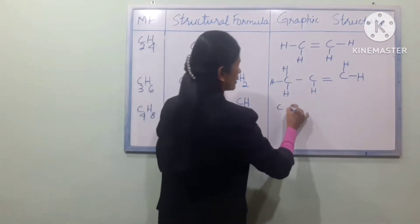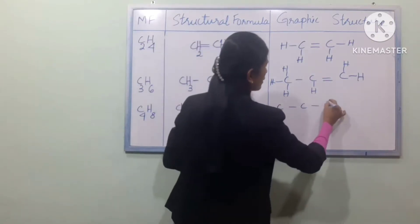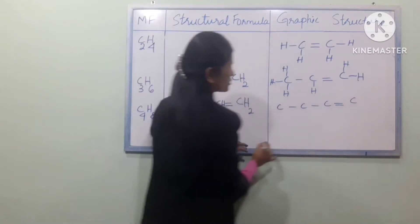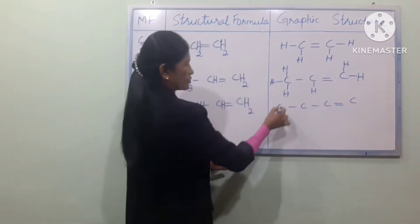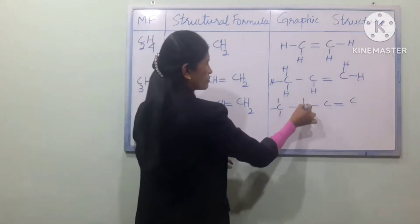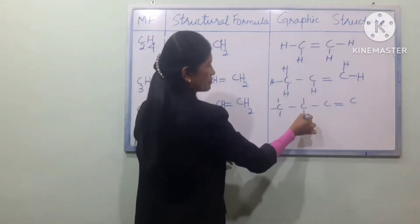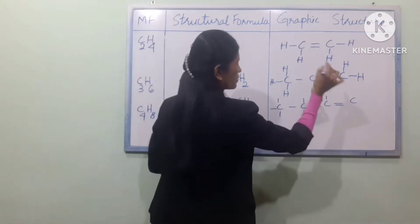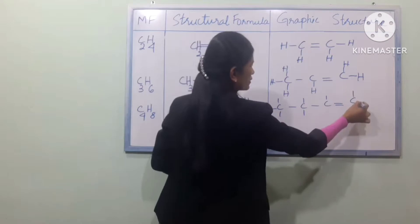Now you can draw C4H8 with the double bond placed along the chain.